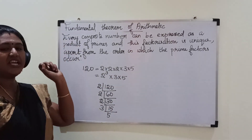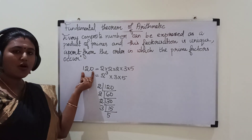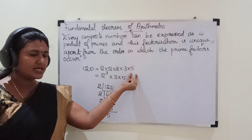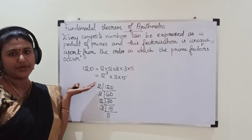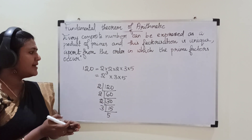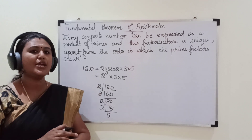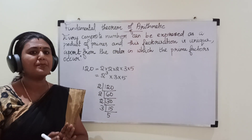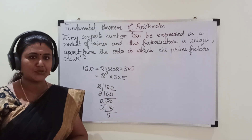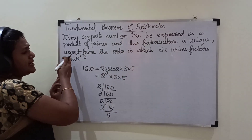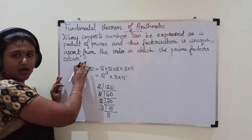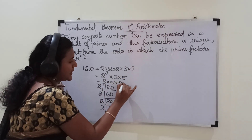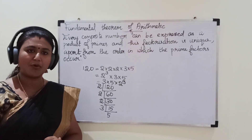So this is what the Fundamental Theorem of Arithmetic states: every composite number can be expressed as a product of prime numbers and this factorization is unique. We cannot express 120 using other prime numbers — 2, 3, and 5 are the only prime factors of 120. Apart from the order in which the prime factors occur, we can change the order of these prime factors.